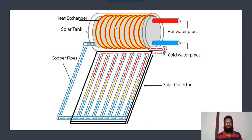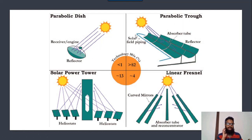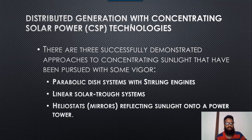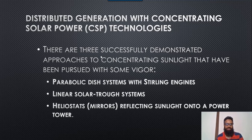For electricity generation, there are four basic methodologies: number one is parabolic dishes, number two is parabolic trough, number three is solar power tower, and number four is linear Fresnel. There are three successful demonstration approaches used to produce electricity: one is the parabolic dish system with the Stirling engine, the second is the linear solar trough system, and the third is heliostats or mirrors reflecting sunlight up to a power tower.